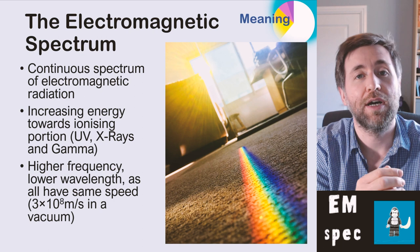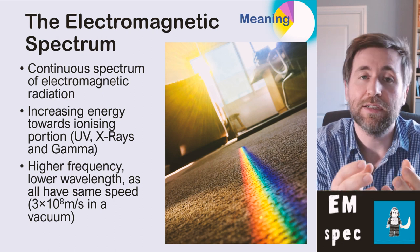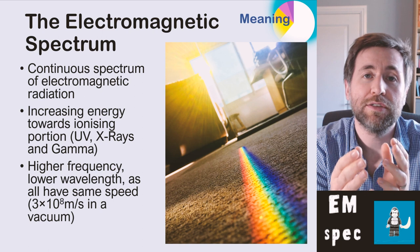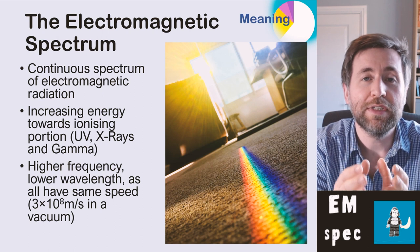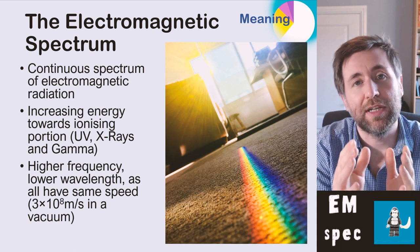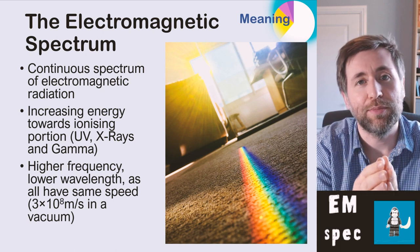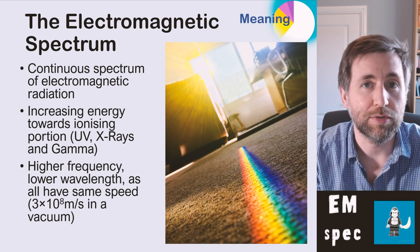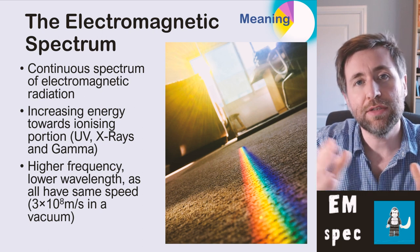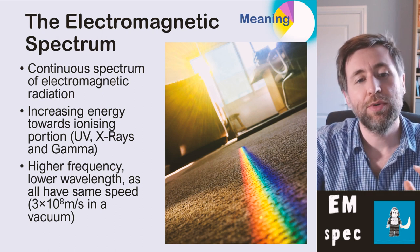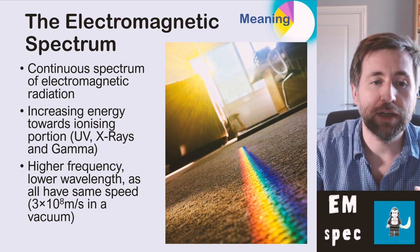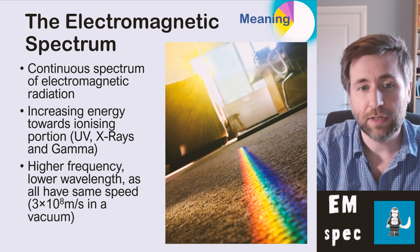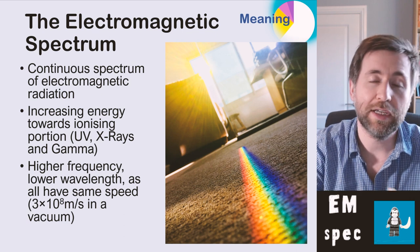Infrared is the type of wave that carries heat. It's the type of wave that all hot objects emit. We can only see this small portion of the electromagnetic spectrum, but we have things that can detect all of the other portions. Essentially, it's a continuous spectrum with increasing energy towards the ionizing portion. And the ionizing portion is ultraviolet, X-rays, and gamma rays.